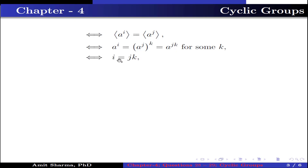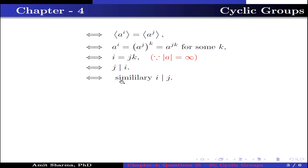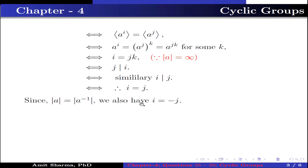This further implies i equals j times k, because the order of a is infinity. This further implies j divides i. In the similar manner, we have i divides j. Since j divides i and i divides j, we have i equals j. Since the order of a equals the order of a inverse, we also have i equals minus j.